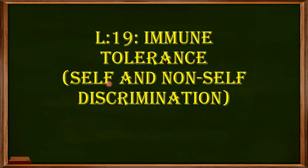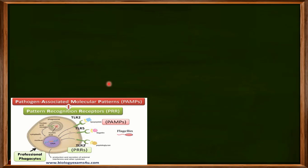In my previous videos, I told you that there are specific molecular structures on the surface of pathogens which are known as pathogen-associated molecular patterns (PAMPs). To recognize these PAMPs, there are specific receptors on the host cells known as pattern recognition receptors. These pattern recognition receptors recognize the PAMPs, which help in the neutralization of the pathogens.